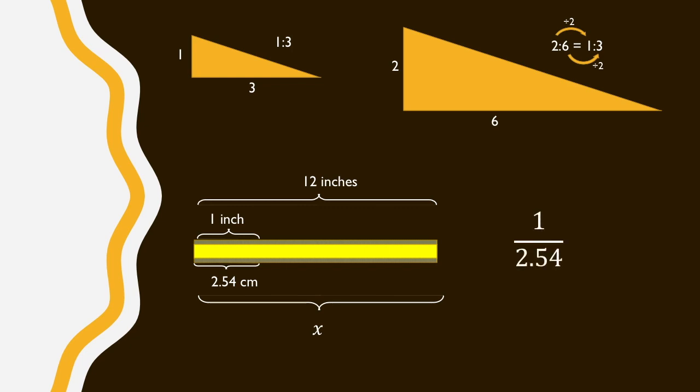We have 1 over 2.54, this is the ratio of inches to centimeters, is equal to inches on top, 12, over the unknown value x. And now we can solve for x.